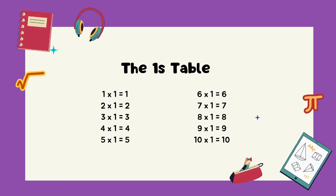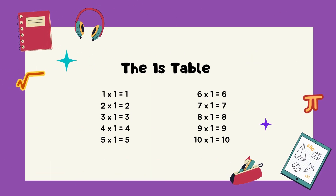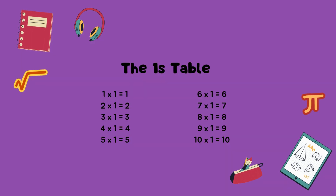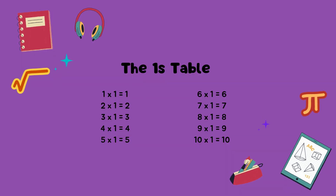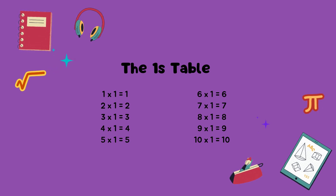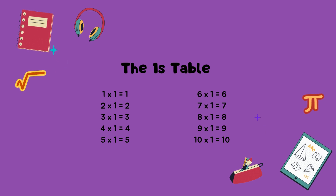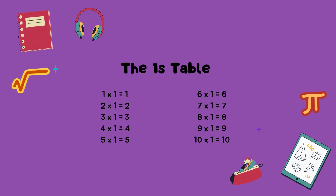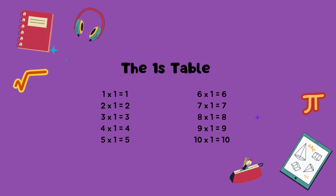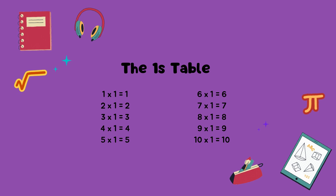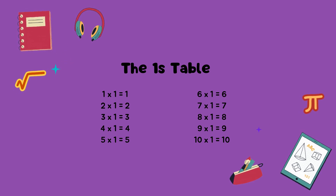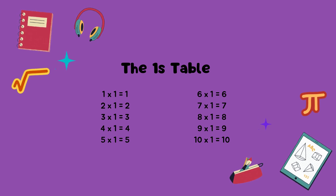The ones table. 1 times 1 equals 1. 2 times 1 equals 2. 3 times 1 equals 3. 4 times 1 equals 4. 5 times 1 equals 5. 6 times 1 equals 6. 7 times 1 equals 7.